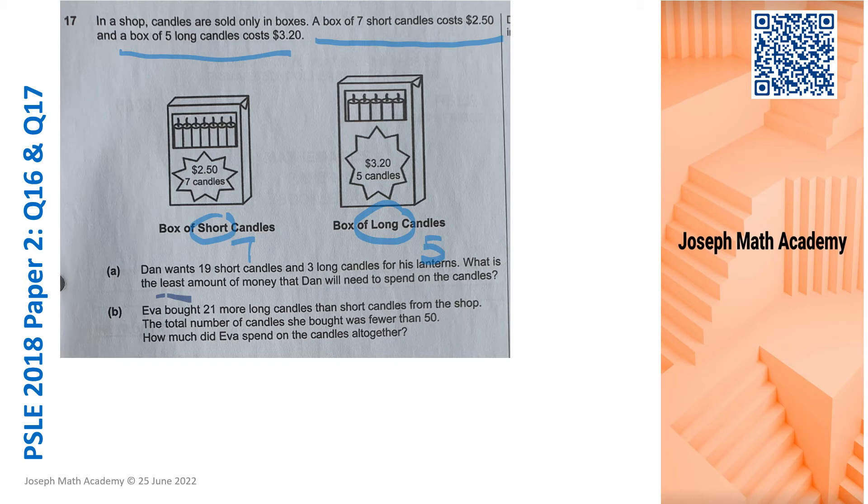So one more time, he needs 19 short ones and three long ones. So if you look at the boxes of short candles, it is in multiples of seven. 19 is not a multiple of seven. So the closest multiple of seven is in this case 21. So that means to do part A, Dan needs to have 21 short ones and three long ones. But the box that has long ones, he has to buy one box of five. So he needs 21 short candles and five long candles in order to use them for his lanterns.